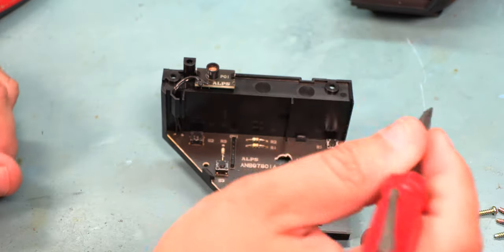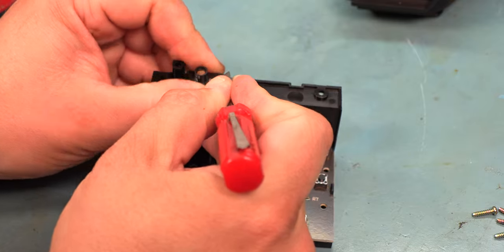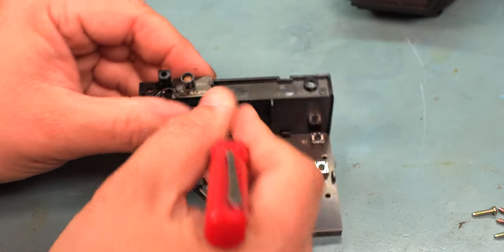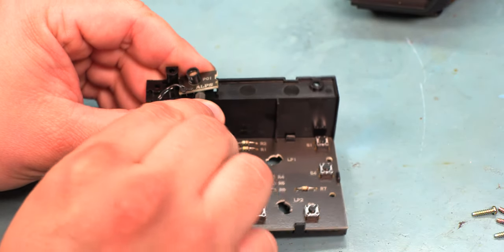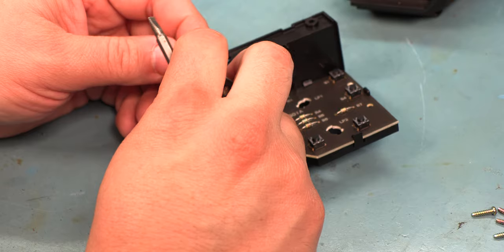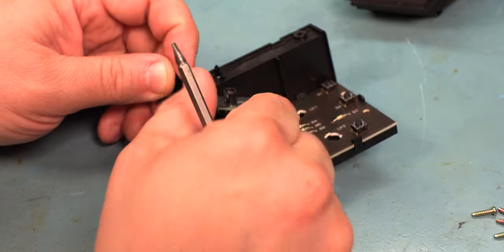We're going to use a small flat blade screwdriver. Gently bend the plastic catch to the side and lift the circuit board away. We will manipulate the wire out of this channel.